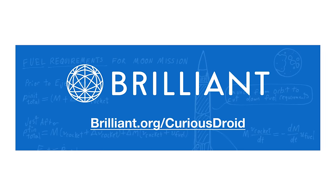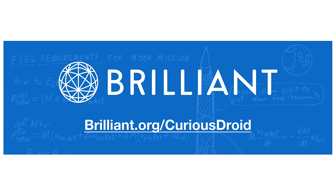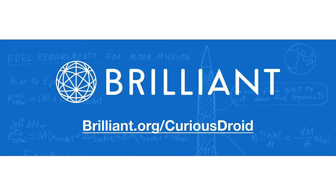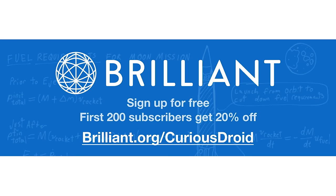To help support us here at Curious Droid and to learn more about Brilliant, just click on the link to brilliant.org/curiousdroid and sign up for free. As a special bonus for Curious Droid viewers, the first 200 people to sign up will get a 20% discount off their annual subscription.